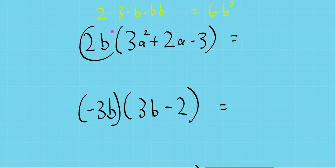Here we have 2b times, put it in brackets here, this, and this, and this. There's a trinomial in here, there's 1, 2, 3 terms: first term, second term, third term.